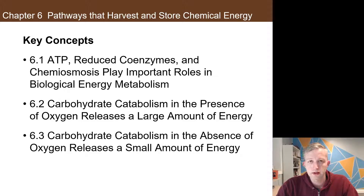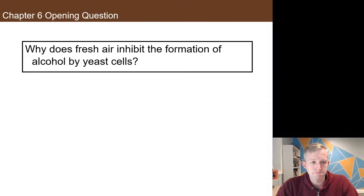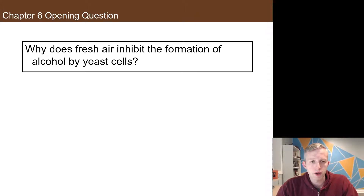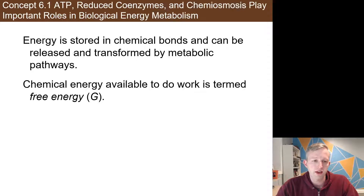In this chapter, we're also going to look at cellular respiration and photosynthesis. The question for this chapter opens with: why does fresh air inhibit the formation of alcohol by yeast cells? Using some prior knowledge, you may be able to come up with a fairly decent answer. It's related to the idea of fermentation, but we'll look more closely at the process and see how the presence of oxygen is a cutoff point for certain things happening in the cell.